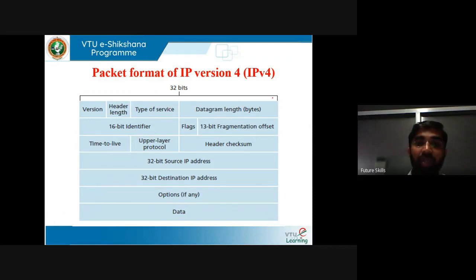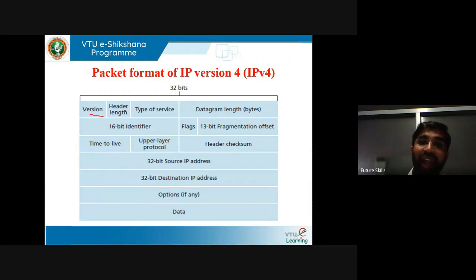IPv4 is 32 bits long. The version field represents the IP protocol version — IPv4 or IPv6; in this case it is IPv4. The header length is 4 bits and specifies the length of the IPv4 header. Each field has a separate description which we will see in the next slide.